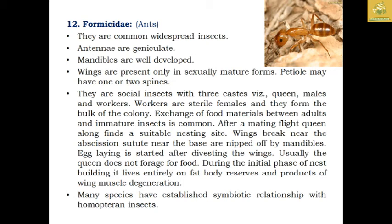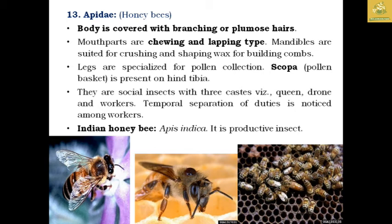The family Apidae comprises honey bees. The body is covered with branched or plumose hairs. Mouthparts are chewing and lapping type. Mandibles are suitable for molding wax to build combs. The legs are specialized for pollen collection, and the scopa is present on the hind tibia. They are social insects with three castes like ants and termites: queen, drone, and workers. Temporal separation of duties is noticed among workers. Example: the Indian bee, Apis cerana indica, an important producer of honey for human consumption.